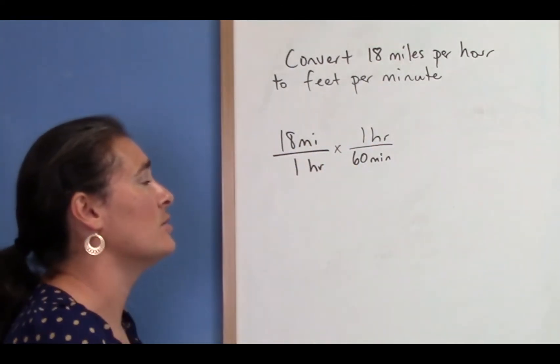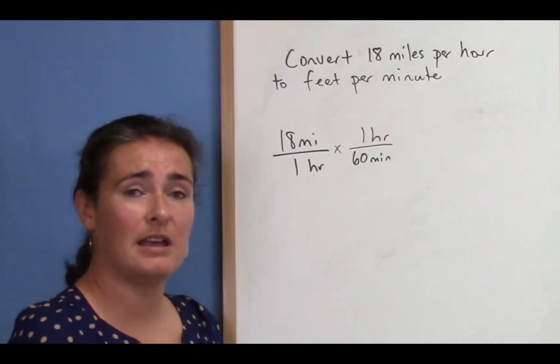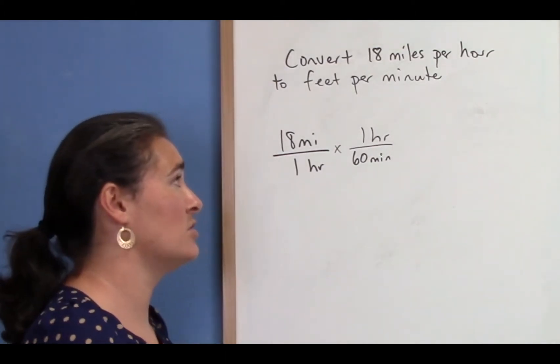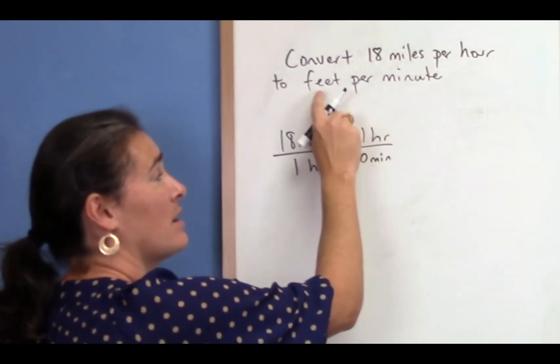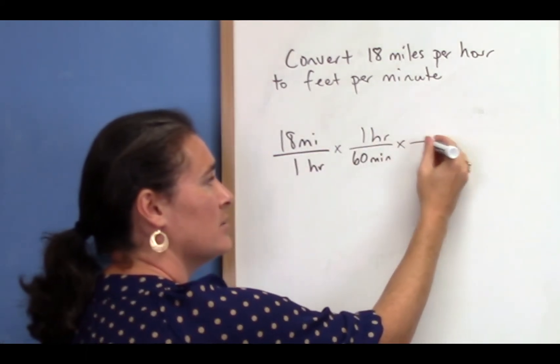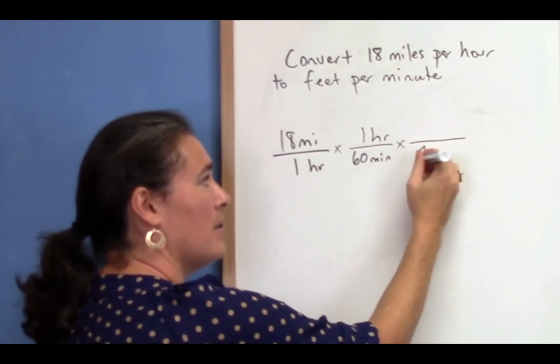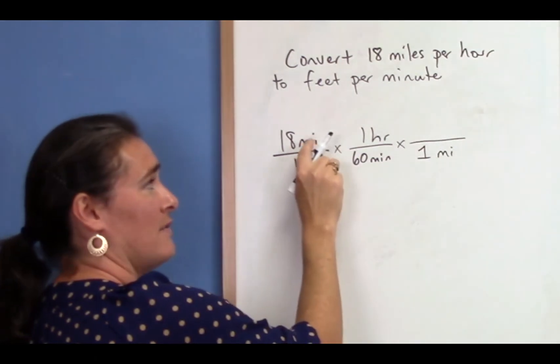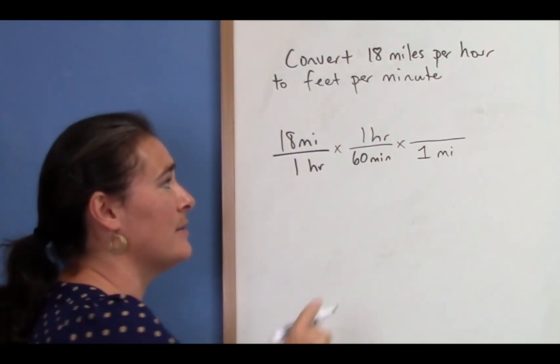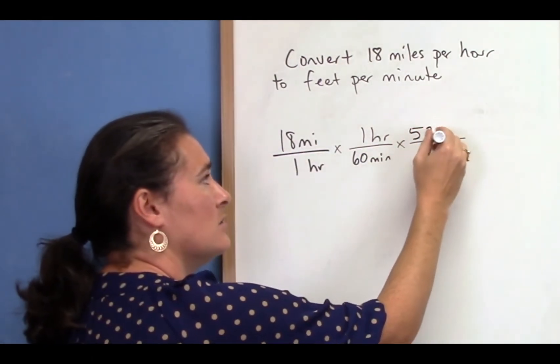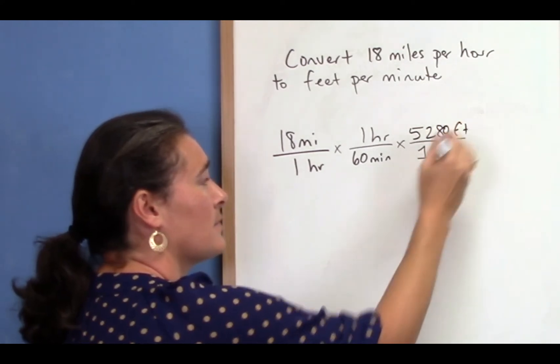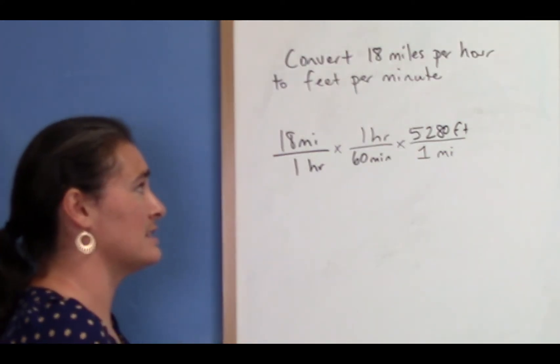I still need to get rid of the miles though. So I know that one mile is 5,280 feet and feet is what I'm looking for. So I'm going to do another conversion. I want miles to be in the bottom because it was on the top here and that'll help me cancel that out. And 5,280 feet.